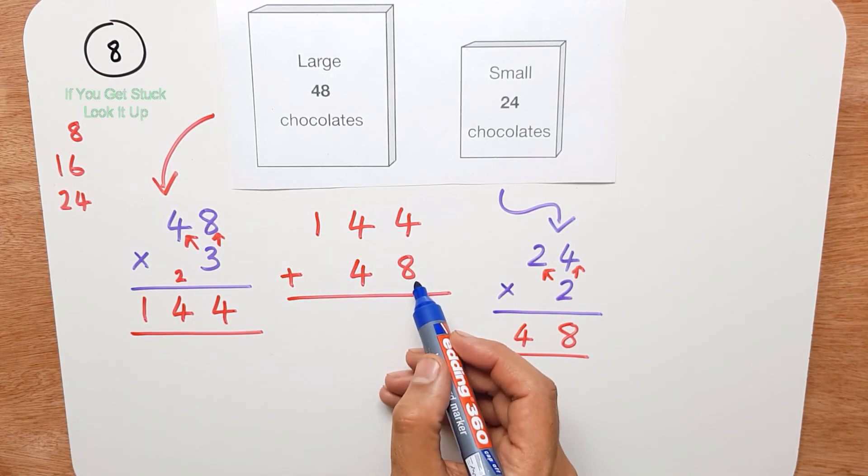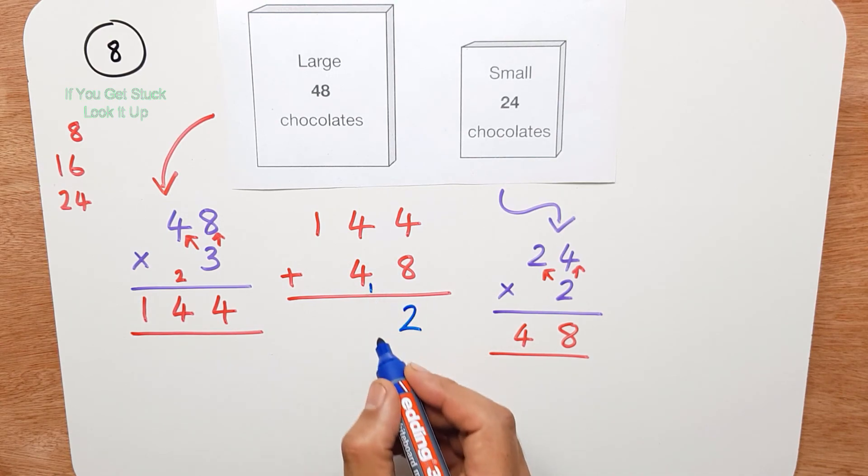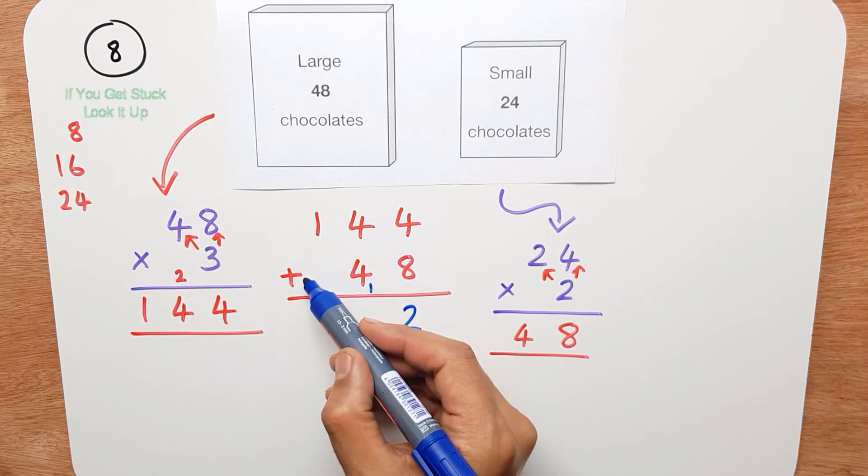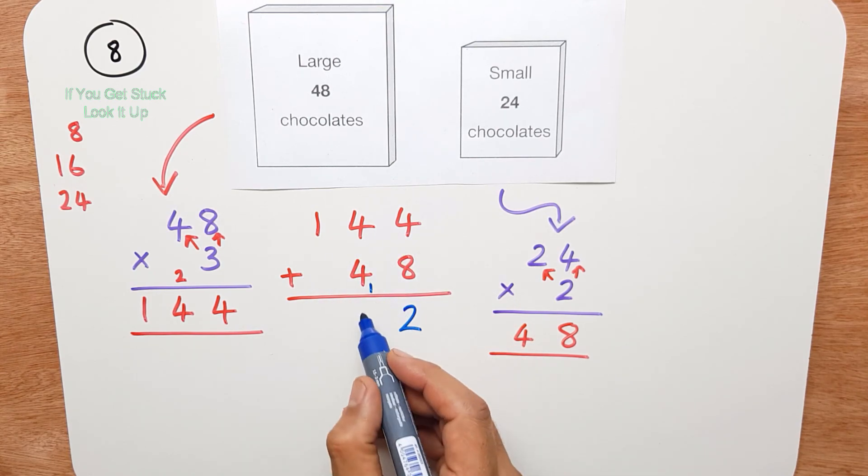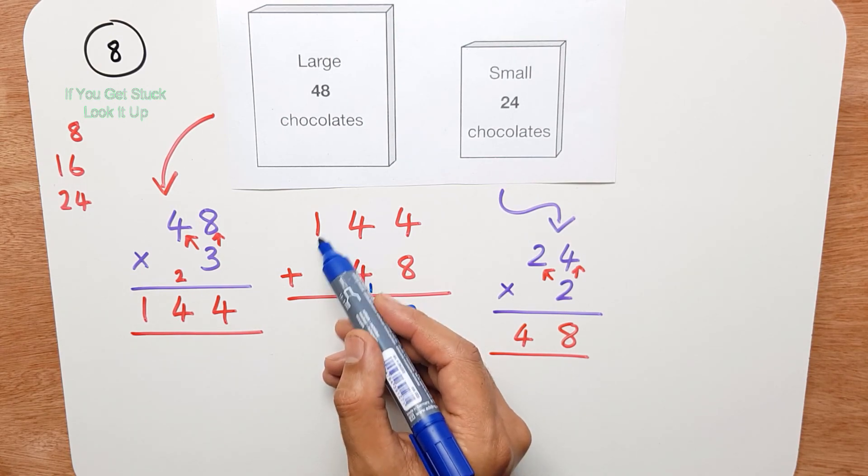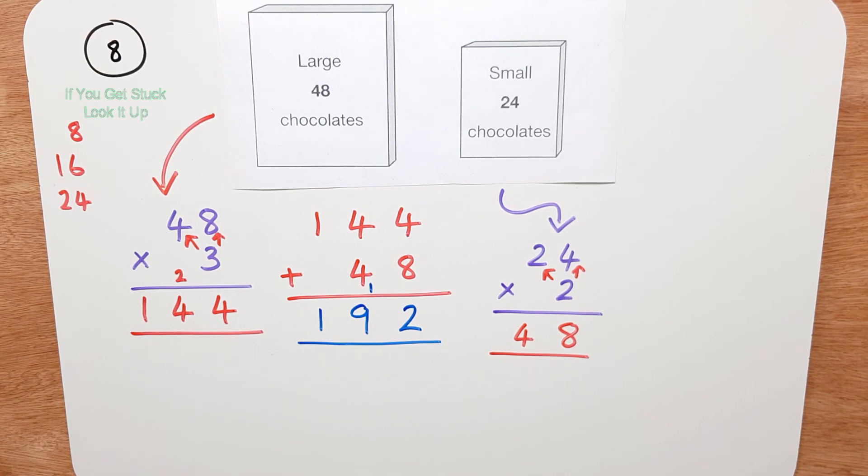4 add 8 is 12, I put the 2 down, and I carry the 1 over. 4 add 4 is 8, plus the 1 I've carried over is 9. And then finally, 1 add nothing is 1. So in total, Ken bought 192 chocolates.